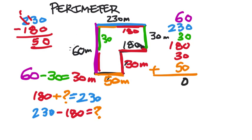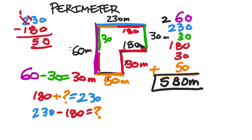In the ones place: 0 plus 0 plus 0 is just 0. In the tens place: 6 plus 3 is 9, plus 3 is 12, plus 8 is 20, plus 3 is 23, plus 5 is 28 — carry the 2. In the hundreds place: 2 plus 2 plus 1 is 5. So that's 580 meters, which is the perimeter.